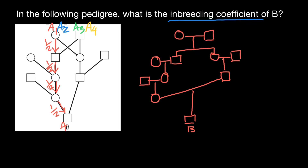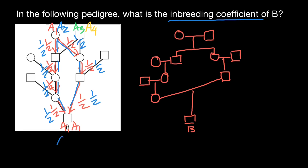The same allele A1 can reach person B from his father's side as well. The probability to get it would also be one half, one half, and one half — so he gets another A1 allele. But he can also get allele A2 from both his mother's side and father's side, and every time the probability is also one half, one half, one half, one half, and one half — resulting in A2 and A2, identical by descent.